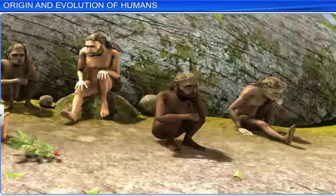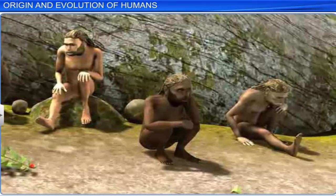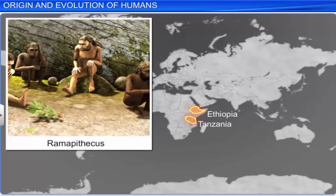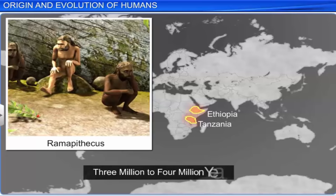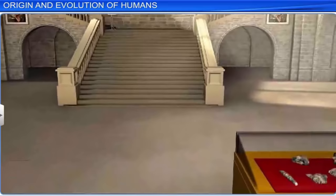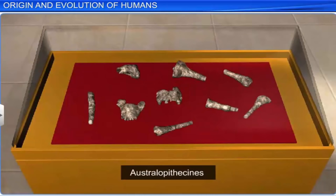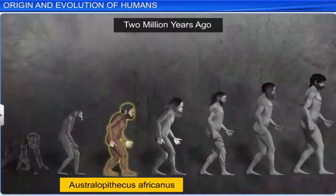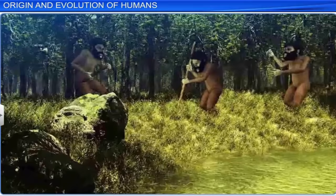Fossils of man-like bones have been discovered in Ethiopia and Tanzania. These bones suggest that Ramapithecus, who had hominid features, had lived in Africa almost 3 to 4 million years ago. The fossils found in the grasslands of East Africa narrated the next stage of human evolution. They suggested that Australopithecines of the genus Australopithecus africanus lived here around 2 million years ago. The main feature of the Australopithecines was that they hunted with stones but were primarily fruit eaters.